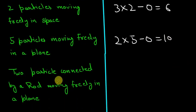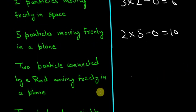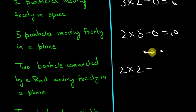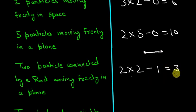Now, two particles connected by a rod moving freely in a plane: it's a two-dimensional space with two particles, minus one constraint — they are connected by a rigid rod, meaning the distance between them is fixed. So two into two minus one gives three degrees of freedom.